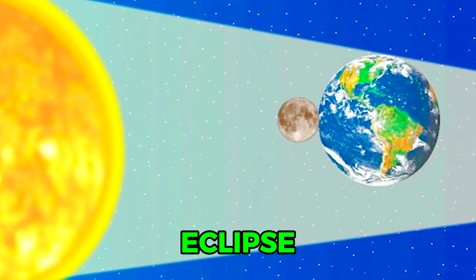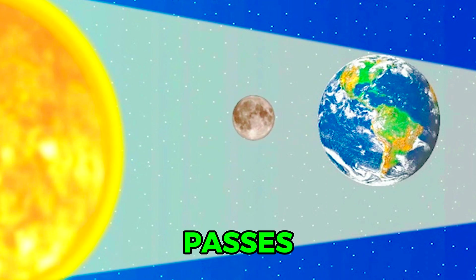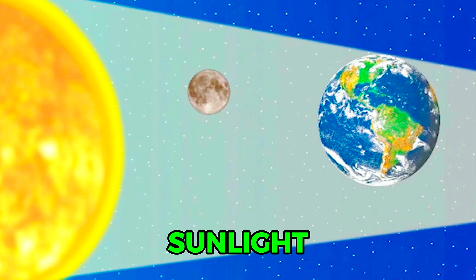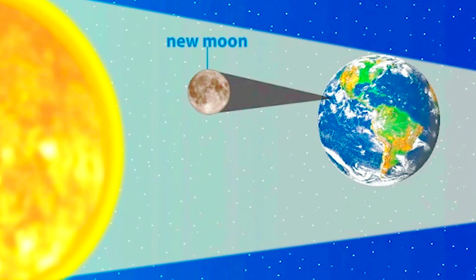A solar eclipse occurs when the Moon passes directly between the Earth and the sun, and sunlight is blocked from hitting the Earth. A total solar eclipse will only occur during a new Moon.